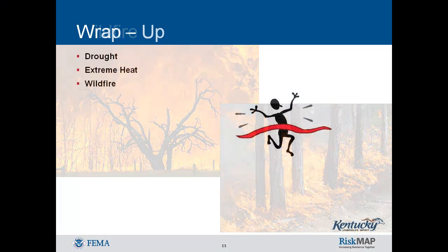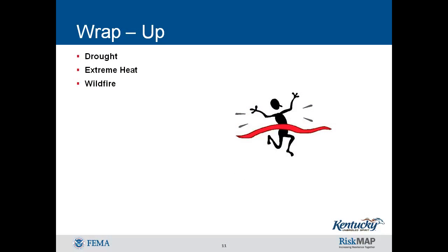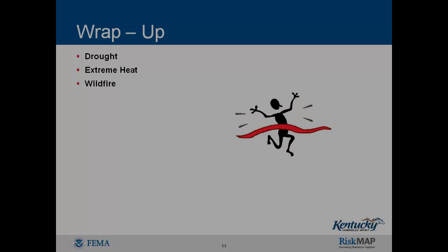Drought is indicated by temperature and precipitation, and affects all areas of Kentucky with both direct and indirect effects. Extreme heat most often occurs in the summer months, is often associated with drought, and is dangerous to people because it makes it difficult to maintain a normal body temperature. Wildfire risk is statewide, but more common in heavily forested areas, and is caused by natural events such as lightning and by human impacts such as machinery sparks and discarded cigarette butts.